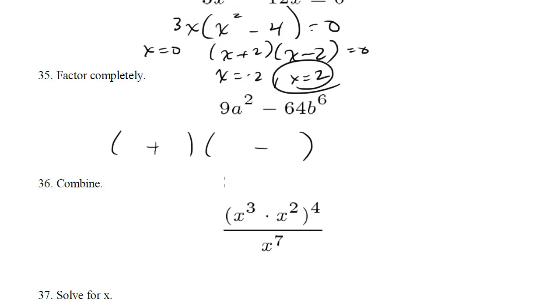This guy is just going to be 3a and 3a because 3a times 3a is 9a squared. And here we need to square root this, so it's going to be 8 and 8 because 8 times 8 is 64.